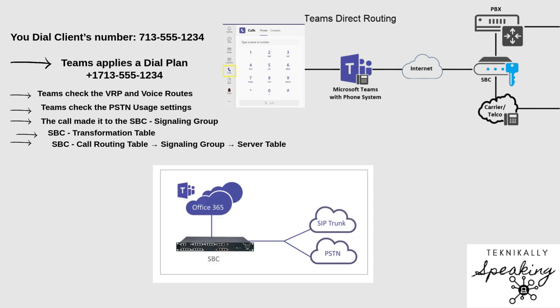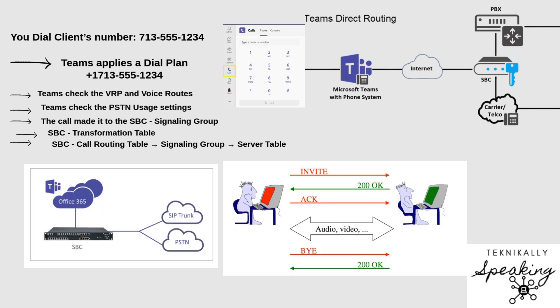Finally, the call is sent out to the PSTN — the public telephone network. The phone on the other end rings, and your call is complete. For my engineers: in SIP terms, when the called party answers, the SBC or carrier sends a 200 OK SIP message back to the caller. That means the call is connected and you can start talking. Then the media — the voice and audio — starts flowing between both parties.